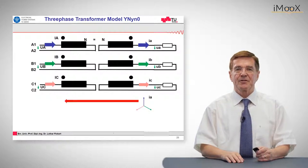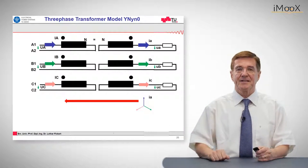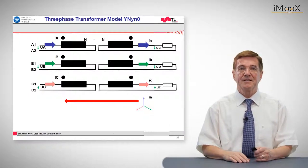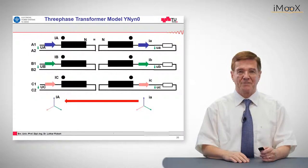So now let's focus on the current. The current on the low voltage side is, in case of regular loading, a perfect star. This is transferred to the primary side, just again as a perfect star.